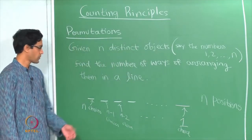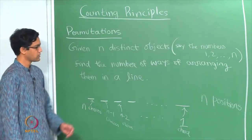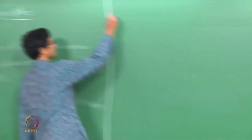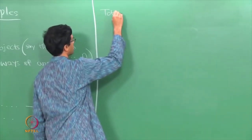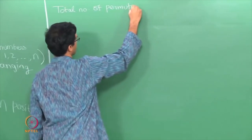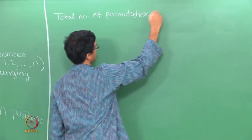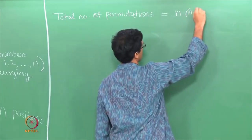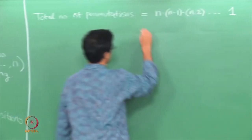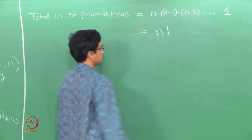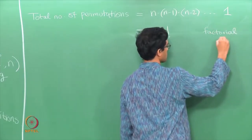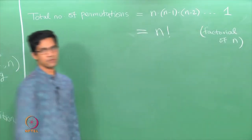The multiplicative principle, or product principle, says the total number of choices is just the product of the number of choices at each one of these steps. So the total number of permutations of the numbers 1 through n is therefore n times (n-1) times ... times 1, which is n factorial.